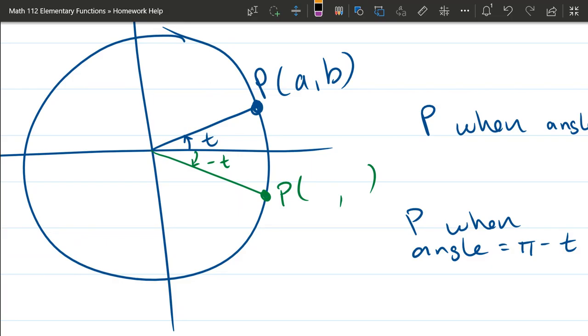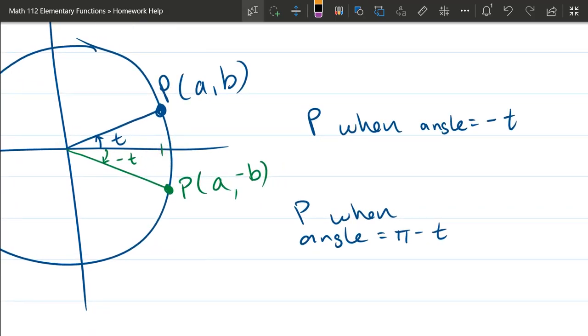Well, let's think about what changed. If we look at the original point, the x coordinates shouldn't change. So we're going to get regular just A for the x coordinate. However, the y coordinate went from positive to negative. So that means our B is actually going to be negative B. So that's the answer for when angle is negative t. Our point is A, negative B.